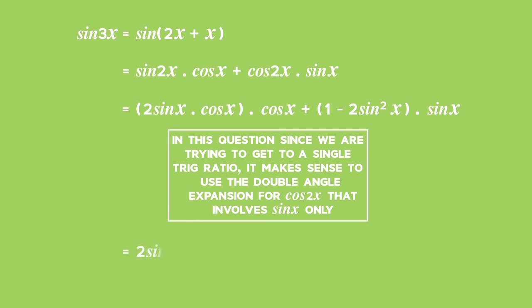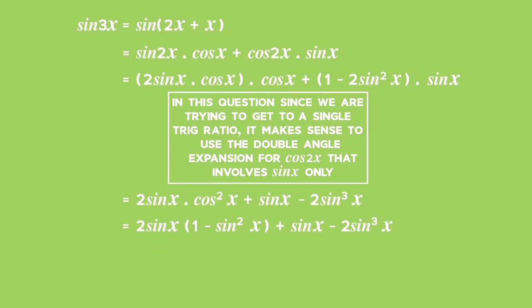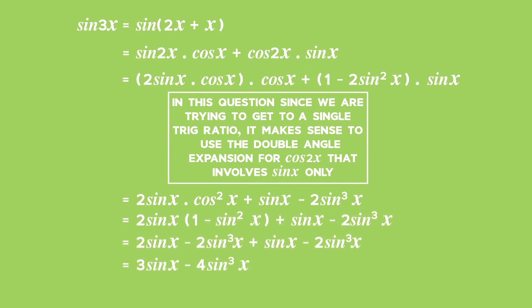Replacing sin 2x and cos 2x with their compound angle formulae and simplifying, we get 2 sin x times cos² x plus sin x minus 2 sin³ x, which gives us 2 sin x plus sin x minus 2 sin³ x plus sin x minus 2 sin³ x, equal to 3 sin x minus 4 sin³ x. Hence, sin 3x has been expressed in terms of sin x only as 3 sin x minus 4 sin³ x.